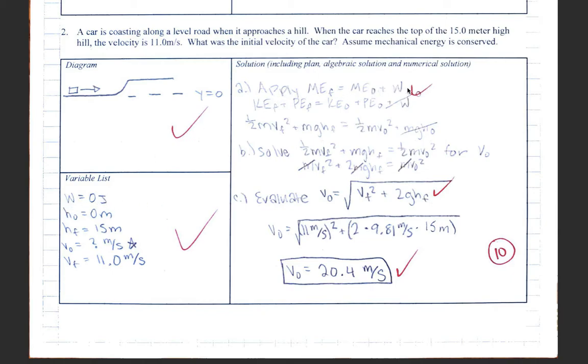So they are going to apply the mechanical energy theorem. That gives them this equation. They are going to solve that equation for V initial, which they do algebraically. There's the algebraic solution. I don't want V initial squared, I want V initial, so there's the solution. They plugged in their numbers, including units, and got themselves a nice answer. So that's a good example of a complete solution that is correct.